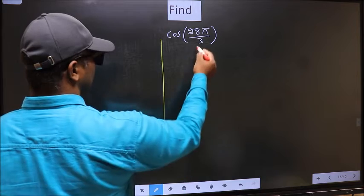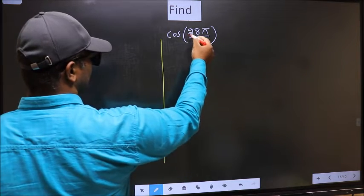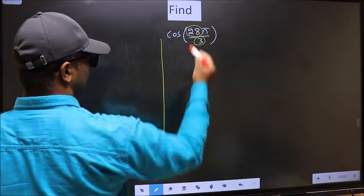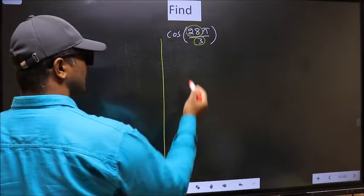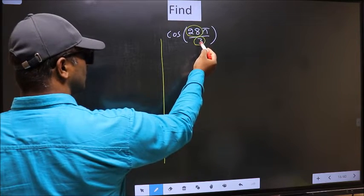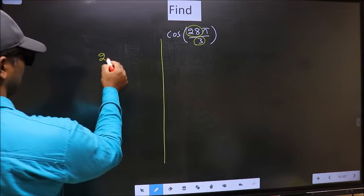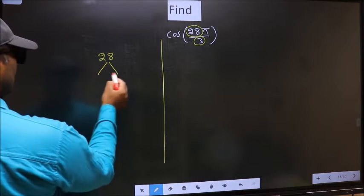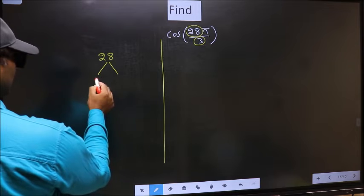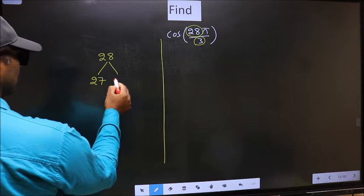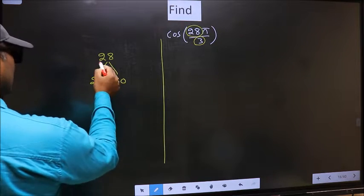In the denominator, we have 3. In the numerator, 28. Now you should check: 28 is close to which multiple of 3? Write the multiples of 3: that is 27 and 30.